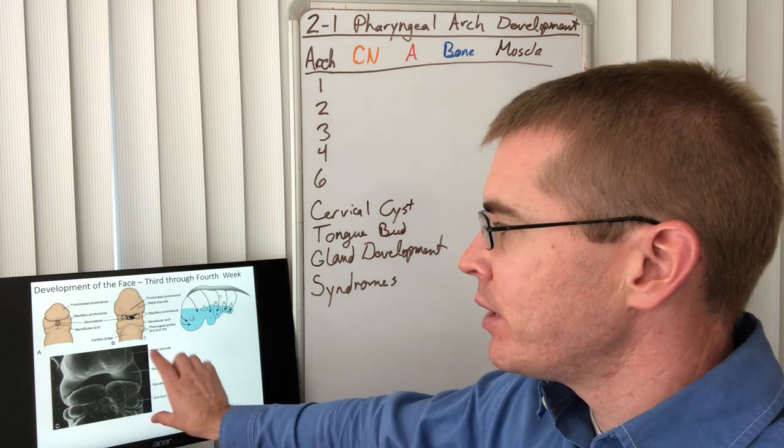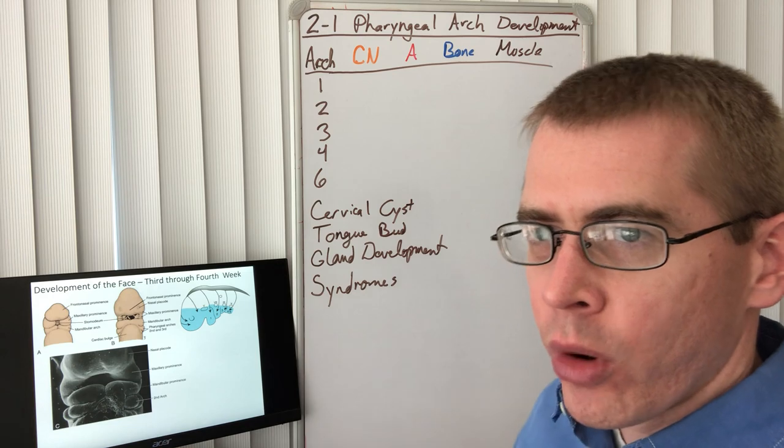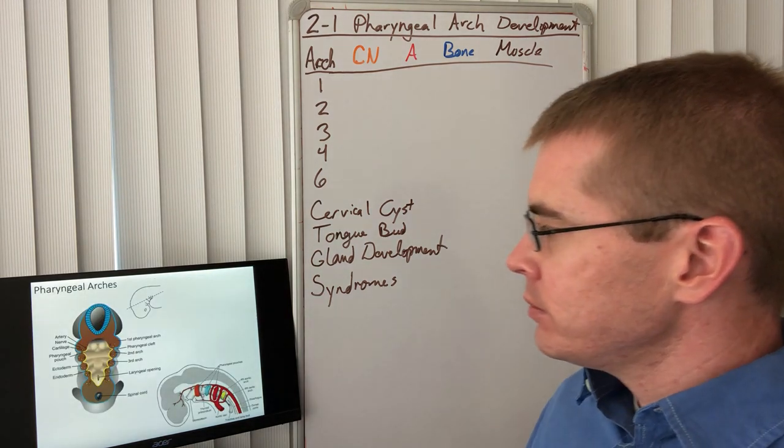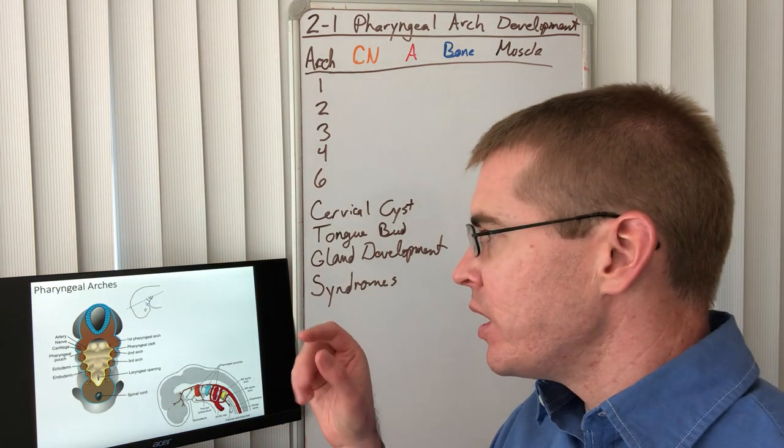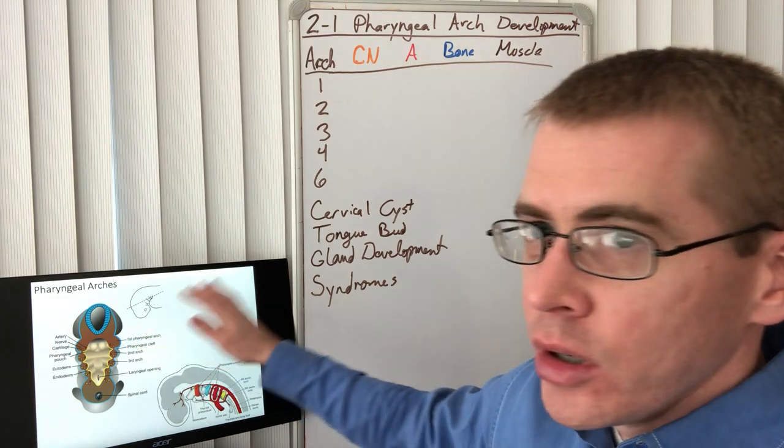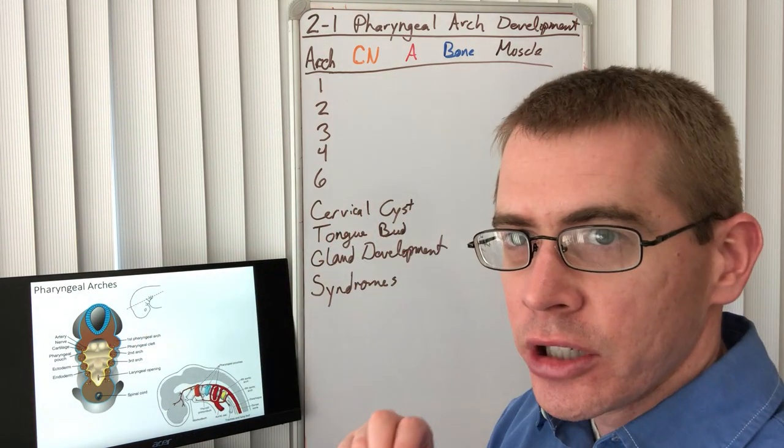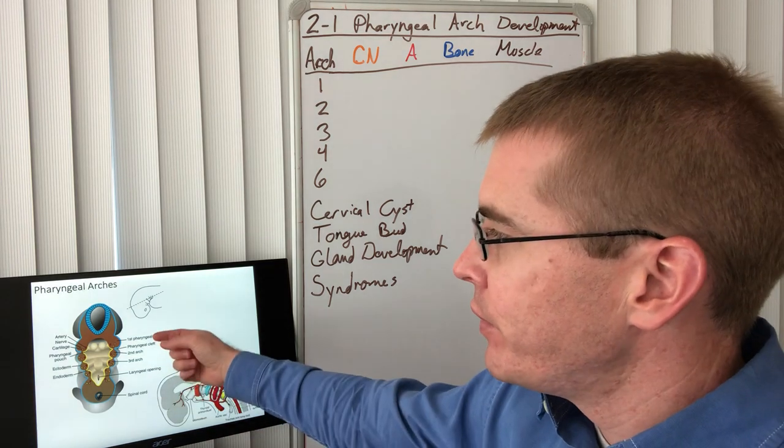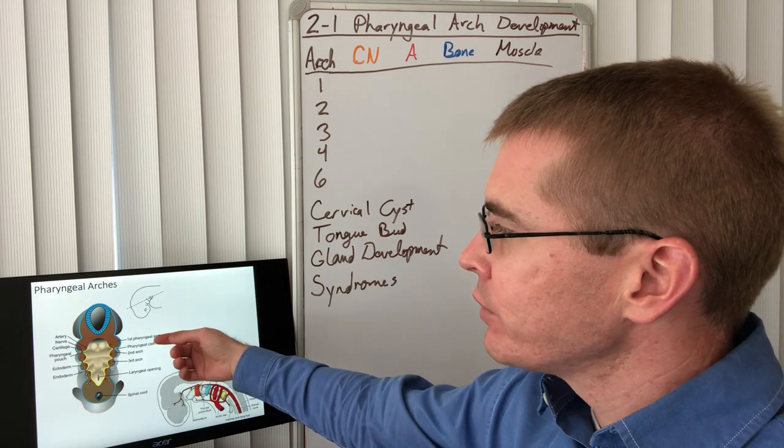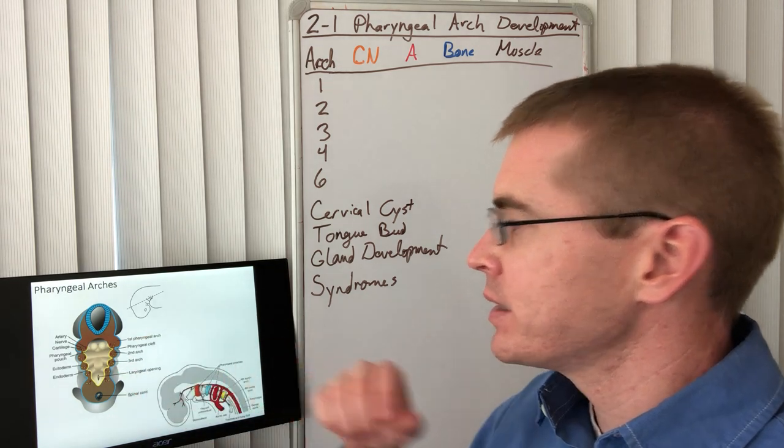So here we have an electron micrograph of all of these arches beginning to form in the third through fourth week. We name these different arches just sequentially. So yes, I can count. There is no fifth arch in humans. The fifth arch is very early on obliterated. So we are left with a first, second, third, fourth, and sixth arches.